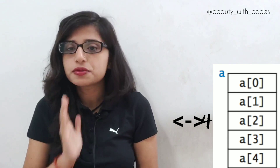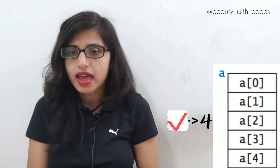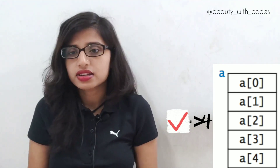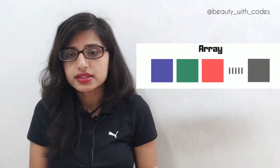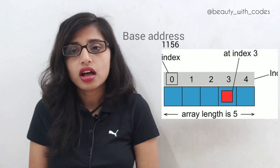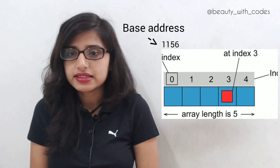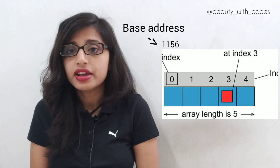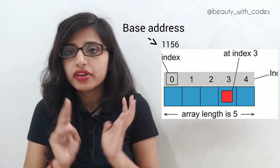And see whether 4 is present there or not — as simple as that. How is this possible? When we store our array in main memory, it gets stored contiguously. The starting address of an array is also called the base address, and it will always be given.